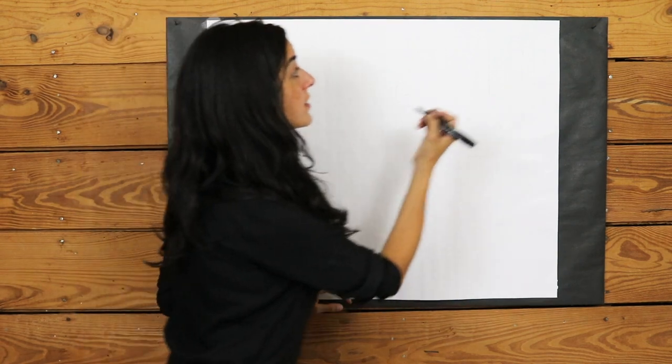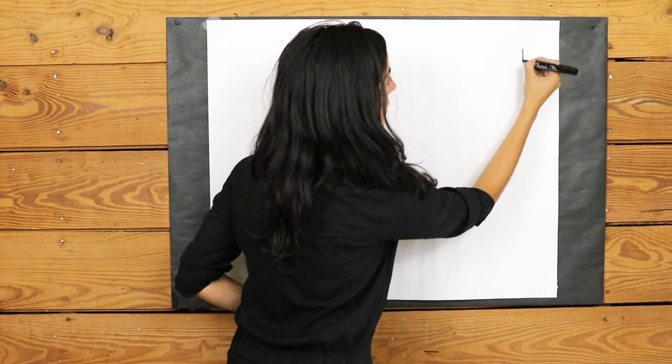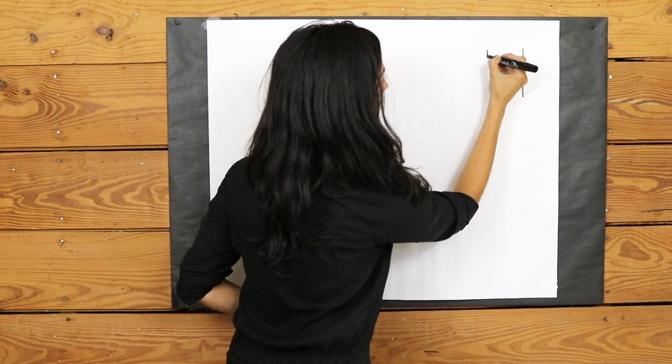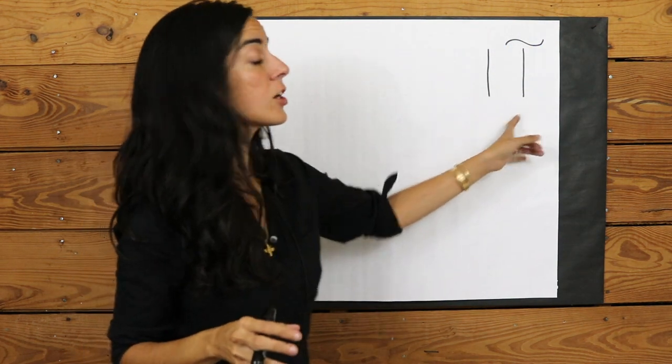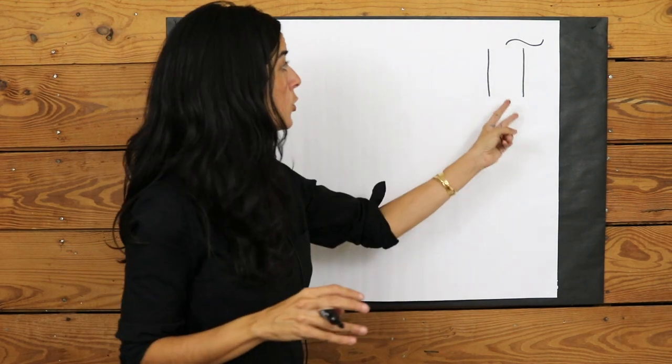So first, let's go over the letters that appear in the alphabet that also act as vowels. The first of these is the first letter of the alphabet and that is the letter A. So A has two different versions.